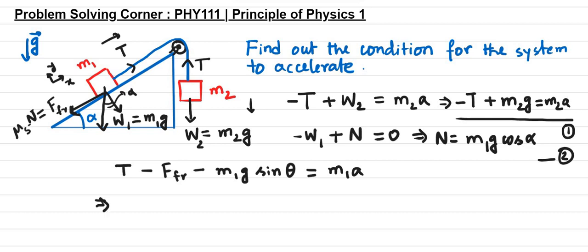T equals, what do we have for T? T equals the frictional force, which is Mu S times N, but N is M1G cosine alpha. And then minus M1G sine alpha. I think I've written theta here. And then this should be equal to M1A.